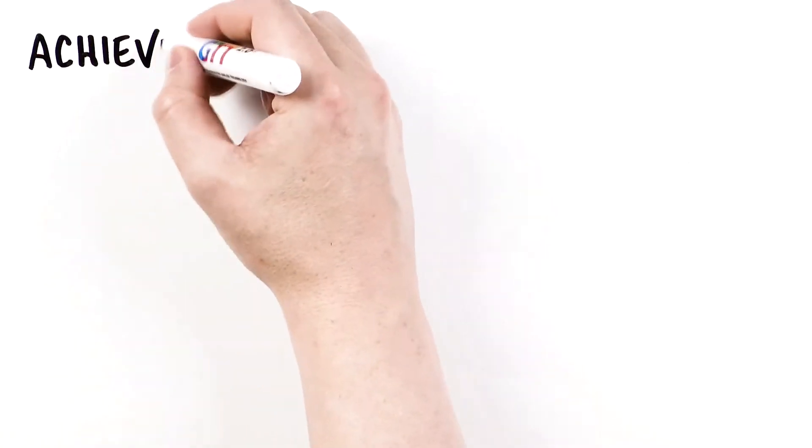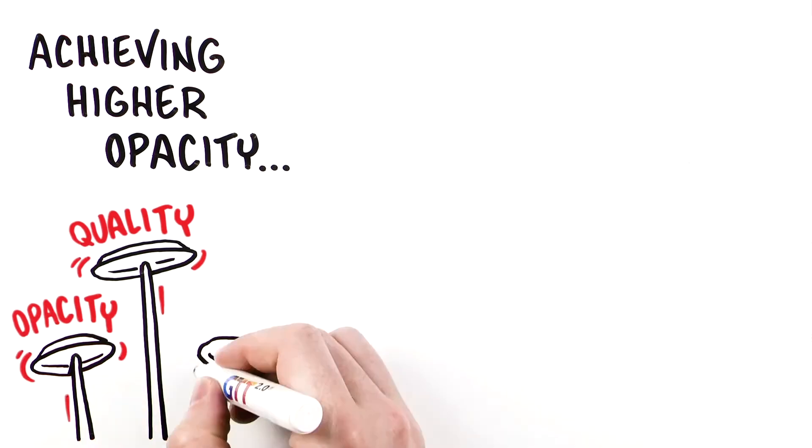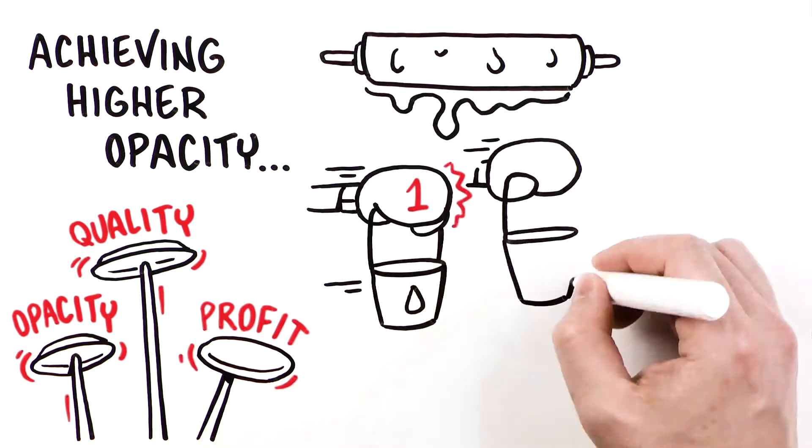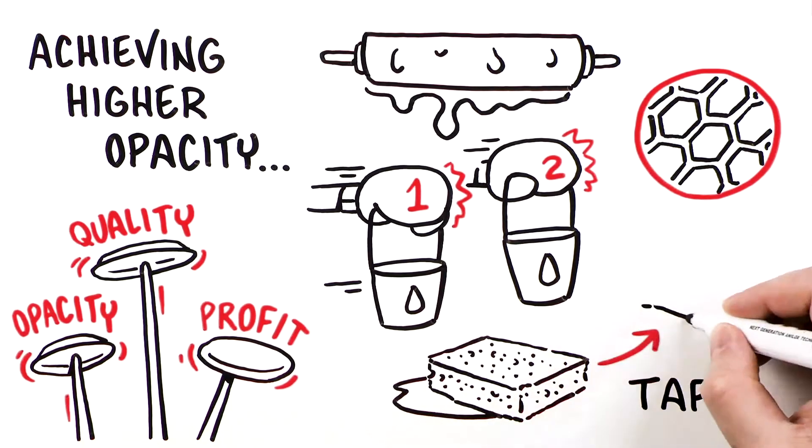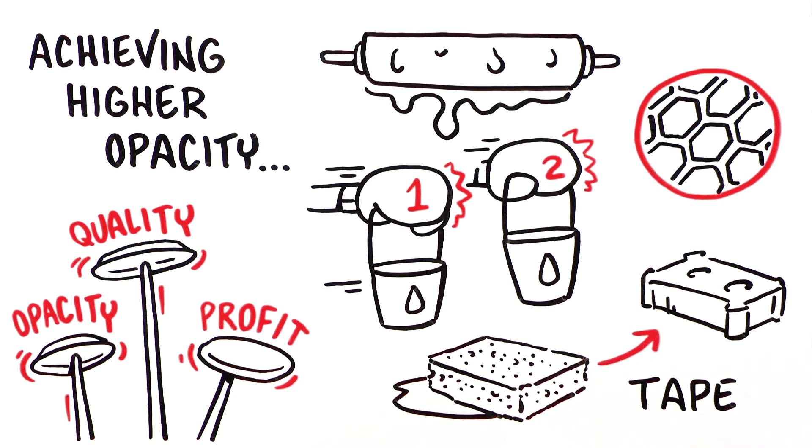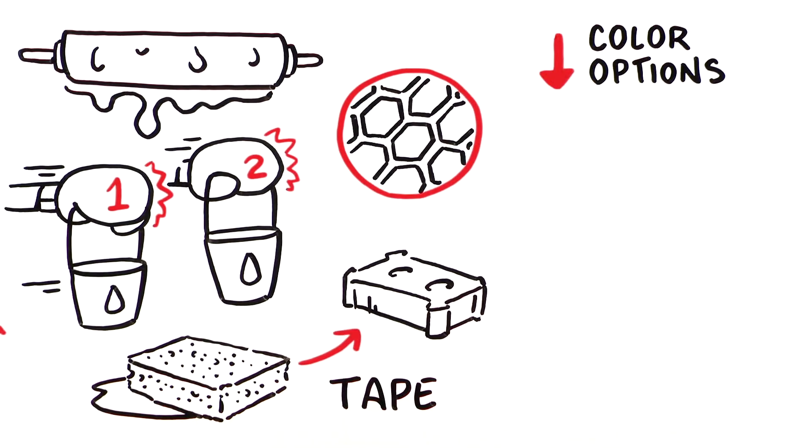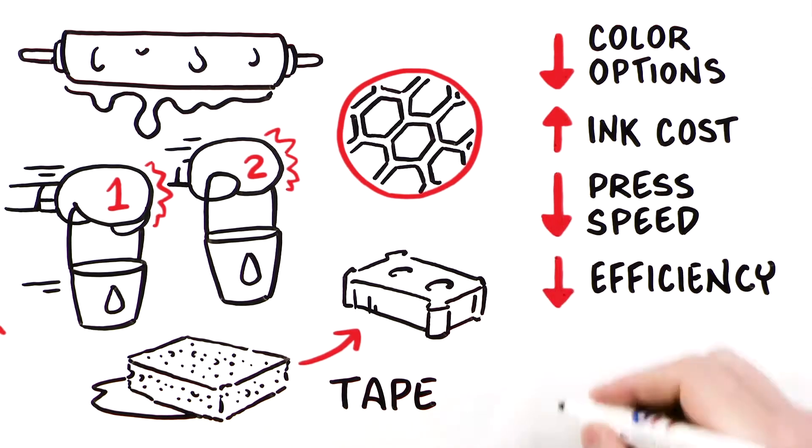Numerous methods exist to achieve higher opacity. However, each solution results in a trade-off between opacity, quality, and profitability. Higher anilox volume, a double hit of white, micro-structures on the plate, and harder mounting tape all increase opacity. Unfortunately, they can lead to less color options on press, higher ink cost, slower press speed, and increased waste.